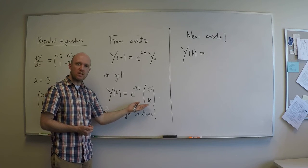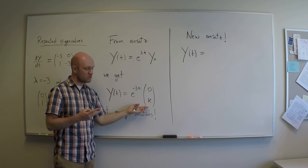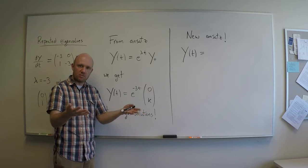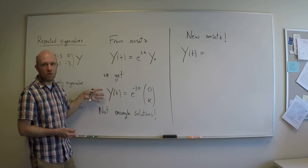Because I don't have two linearly independent eigenvectors like I did when I had two distinct eigenvalues to form a full linear combination to solve any initial value problem that I'm given. So this is not enough solutions to produce a general solution to the equation.